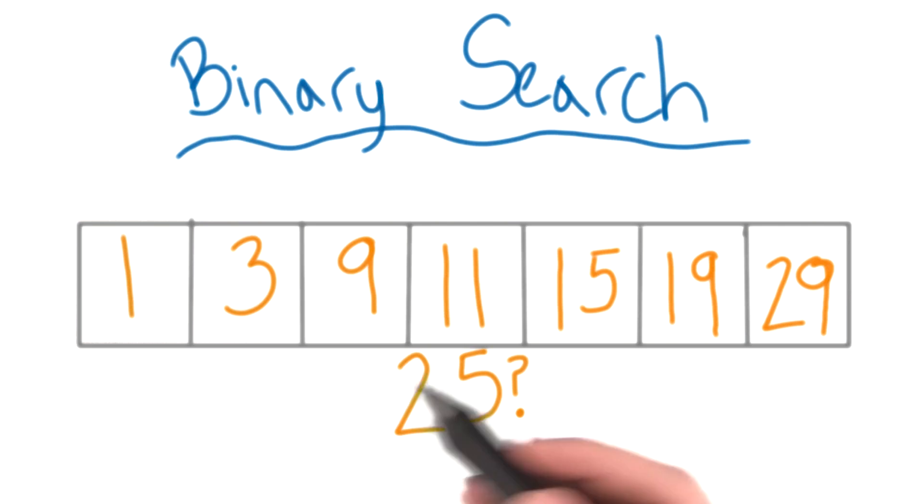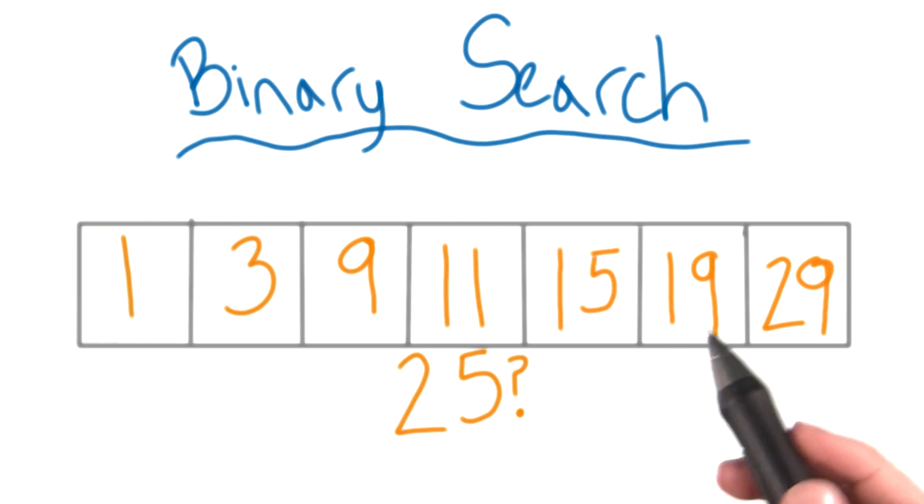Let's say you have an array sorted in numerical order, and you want to see if a number that you have exists in this array.